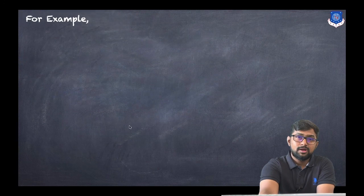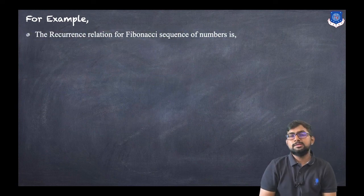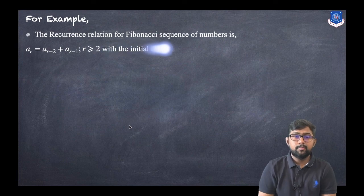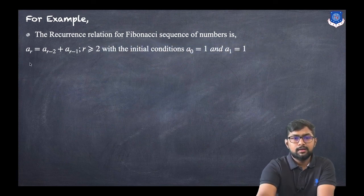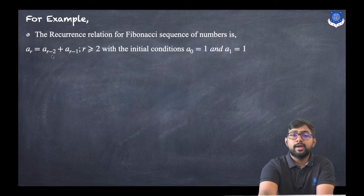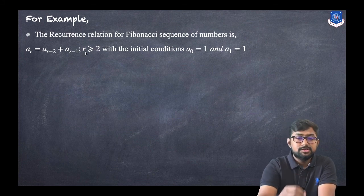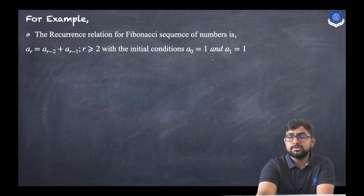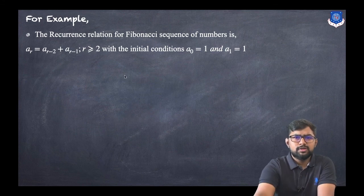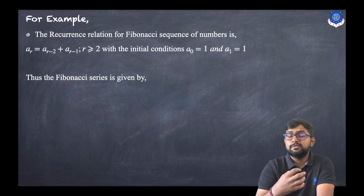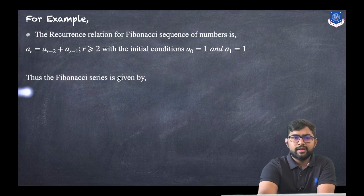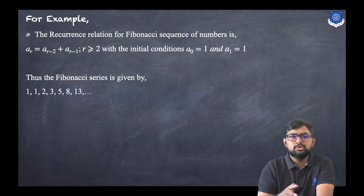For example, the recurrence relation for the Fibonacci sequence of numbers is given by: a_r = a_{r-2} + a_{r-1}, where r >= 2, with the initial conditions a_0 = 1 and a_1 = 1. We all know what a Fibonacci sequence is.